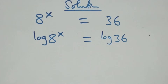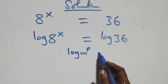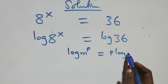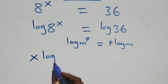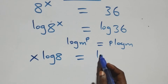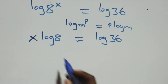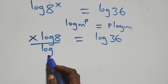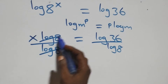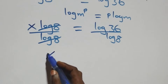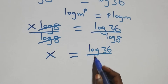Next, we apply the power rule of logarithms: when we have log m raised to power p, this is the same as p log m. So all we have here becomes x log 8 equals to log 36. Then we divide both sides by log 8. Log 8 cancels, and we are left with x equals to log 36 over log 8.